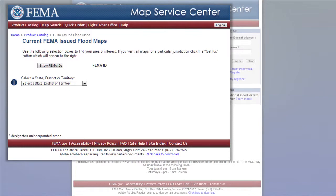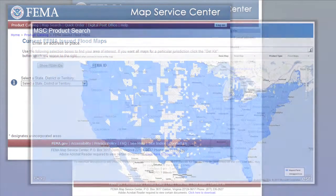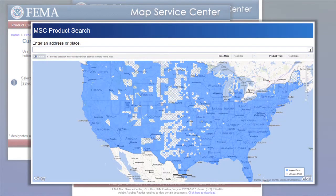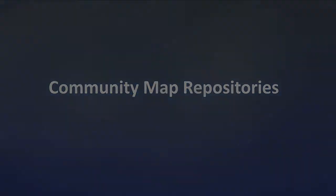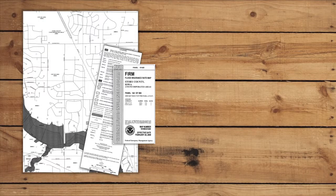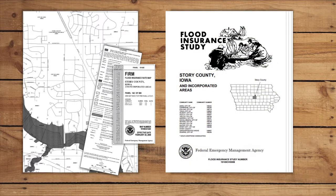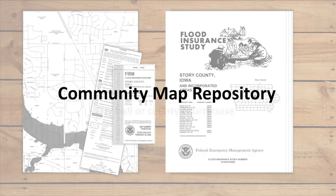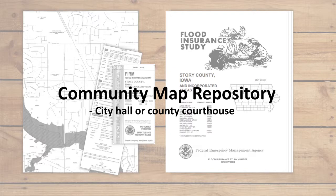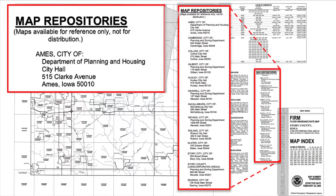FEMA has made easy access to flood maps a priority and has put in place many options for finding flood maps. Paper copies of FEMA flood maps and flood insurance studies for your community can always be found at your community's map repository. This is usually your city hall or, if you live in an unincorporated area of the county, your county courthouse. The map repository address is sometimes printed on the flood map index of the FIRM.